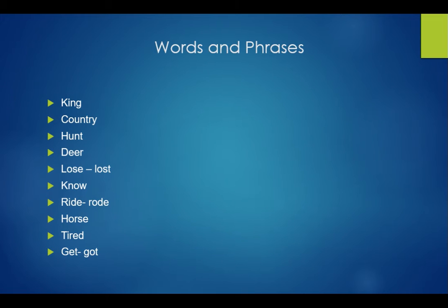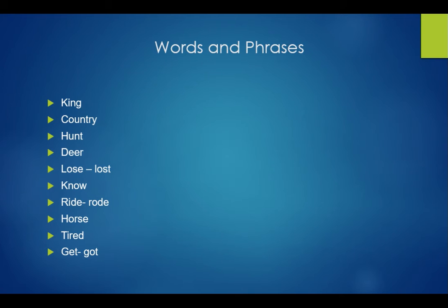Suddenly the king came to know — when he heard the bird, he came to know that probably the robbers were there in the cave and they might come and rob him. He was riding a horse — past tense of ride is rode. Horse ka matlab ghoda. He got off the horse — past tense of get is got — and let's move on to the next one.